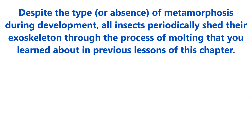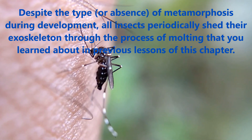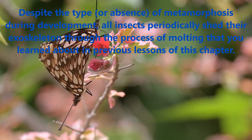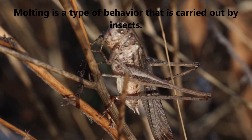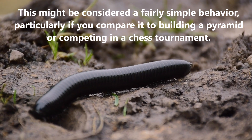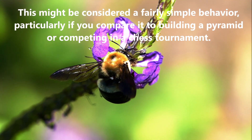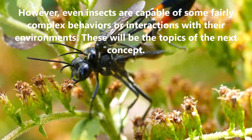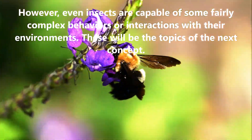Despite the type or absence of metamorphosis during development, all insects periodically shed their exoskeleton through the process of molting, which was covered in previous lessons of this chapter. Molting is a behavior carried out by insects. Even though it might seem fairly simple compared to building a pyramid or competing in a chess tournament, insects are capable of some fairly complex behaviors and interactions with their environment, which will be the topic of the next concept.